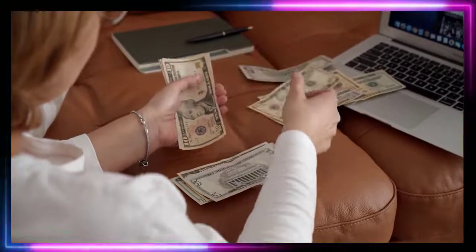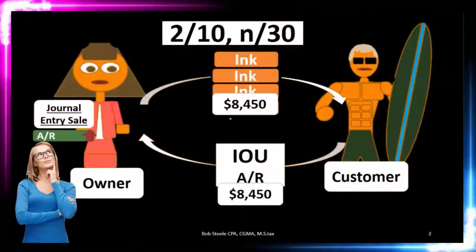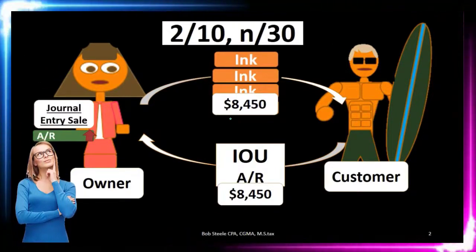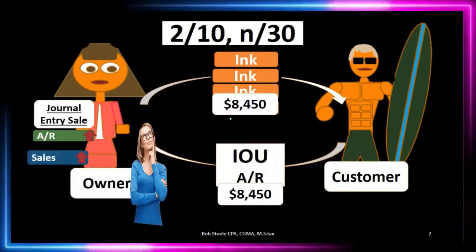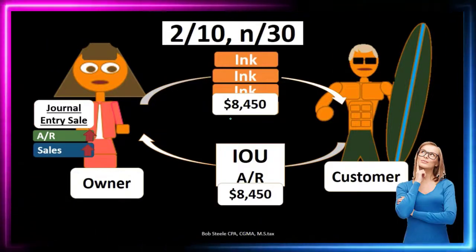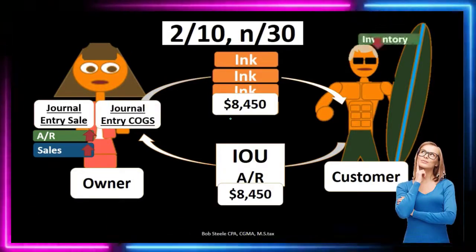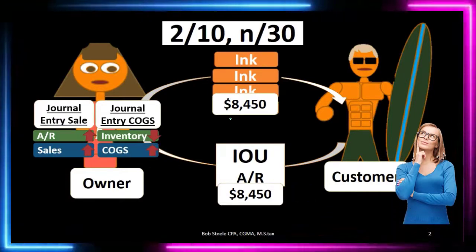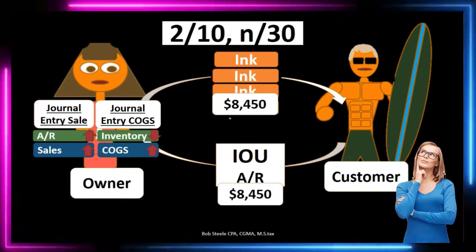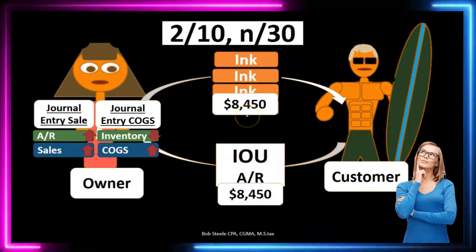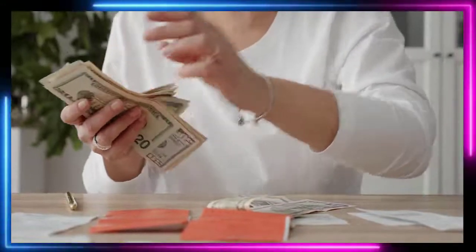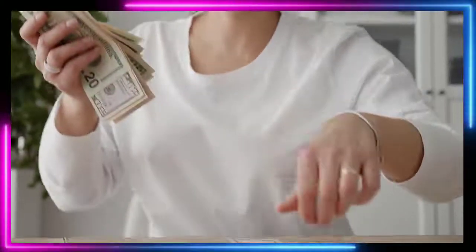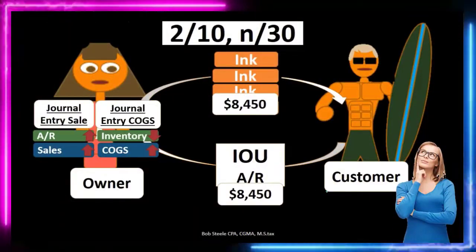The original journal entry has two parts. On the sales side, accounts receivable goes up — we have the IOU from the customer for the full $8,450 — and sales goes up. On the cost of goods sold side, inventory goes down and cost of goods sold goes up. So we record sales at the full price of $8,450 and the receivable at $8,450.